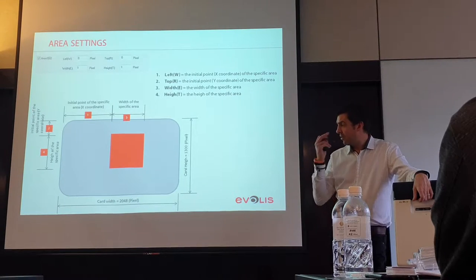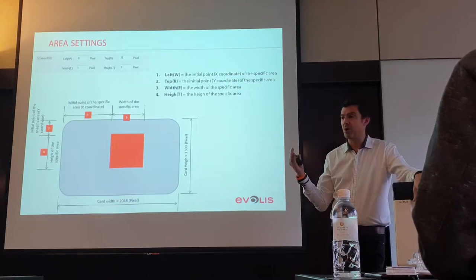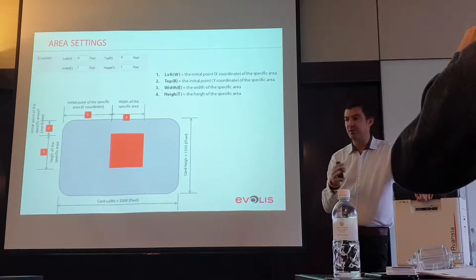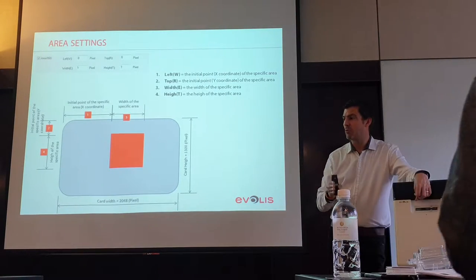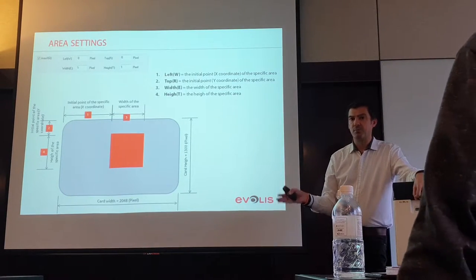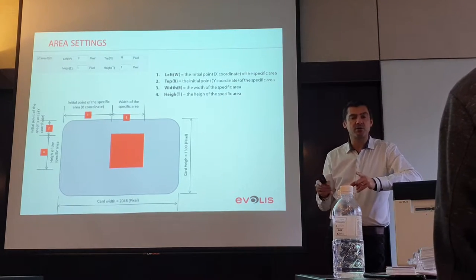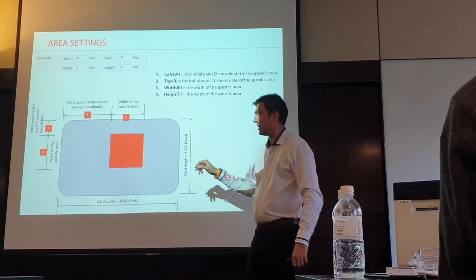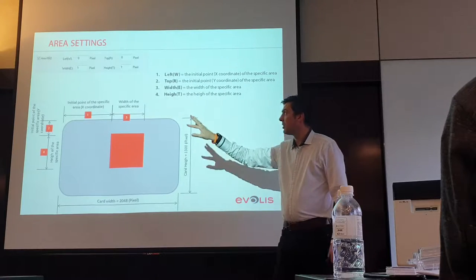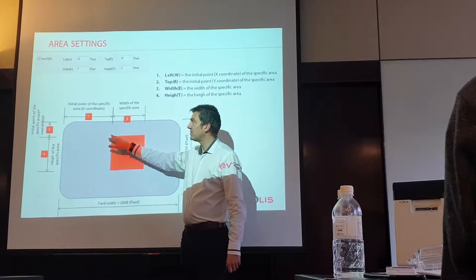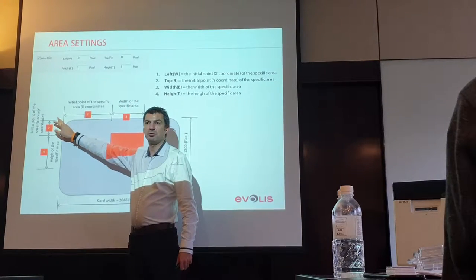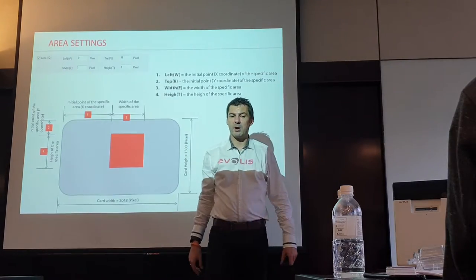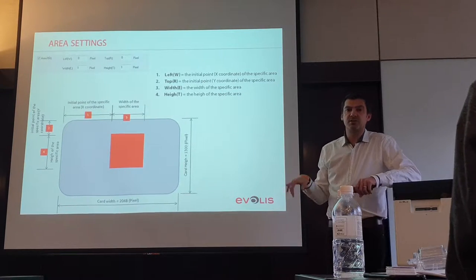The driver offers the possibility to define areas. When you use YMCKI, you can manage black panel settings — here you define all black dots, but you can reserve a part of the card where the black dot will not be applied, which can be very useful for a photo zone. To define the zone you specify the left-top origin point and then define your square. By default the system works in pixels.